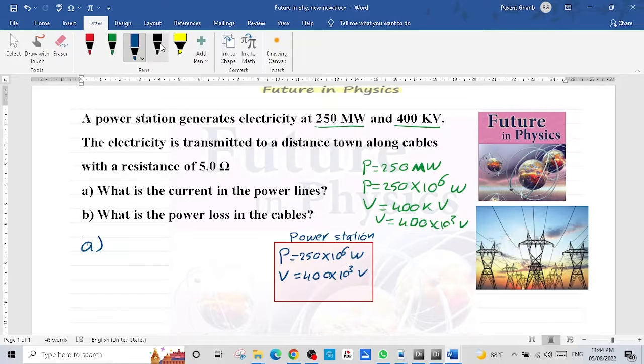That power station produces a current in the cable. So now we need to calculate the current produced from the power station. Which formula do we use for the power, for the current?